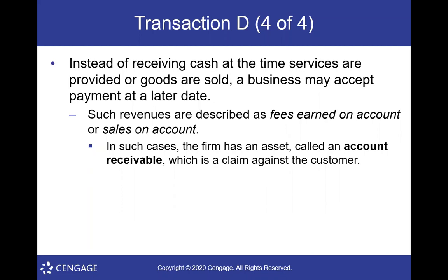Instead of receiving cash at the time of service, a business may accept payment at a later date. When I provide a service and give someone 30 or 60 days to pay me, I create an asset called accounts receivable. Any time you see 'receivable' in an account name, it means it's an asset — money owed to you by someone else. It's not as good as cash, which I can spend today; receivables have to be collected first. Whenever someone owes us money, it's called a receivable, or we say they made a purchase on account.